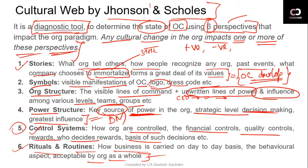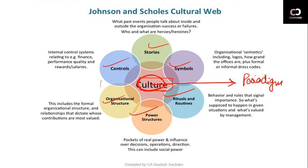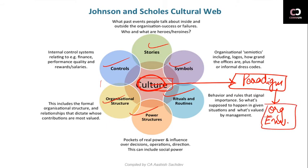These six points impact what is called the organizational paradigm. Paradigm means the organization's environment. In the center of the Cultural Web diagram you can write 'paradigm' — the organizational environment — and these six points impact it. The six points are: Stories, Symbols, Power Structure, Organizational Structure, Control Systems, and Rituals and Routines. You can remember them in any order.